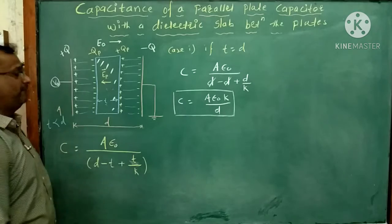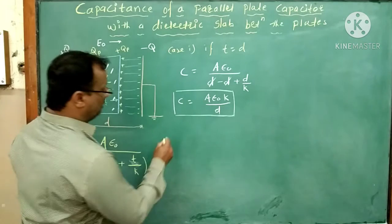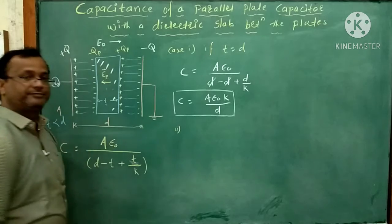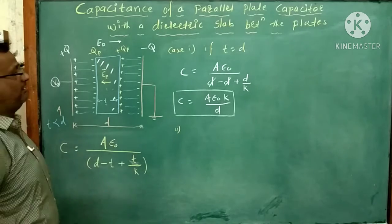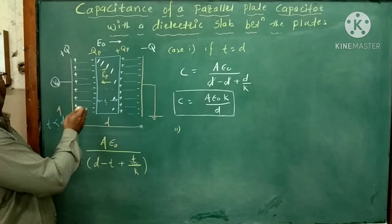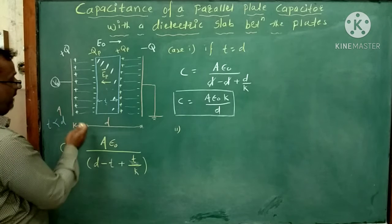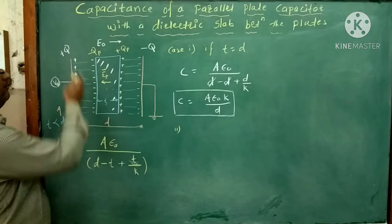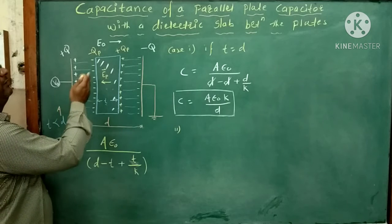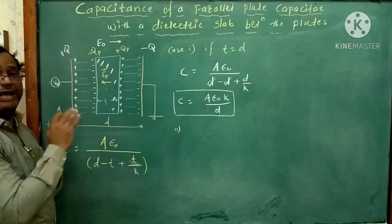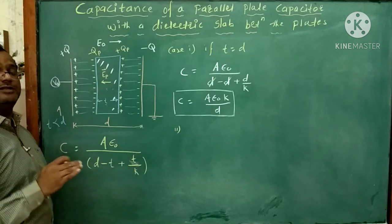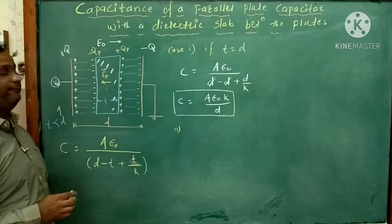So this will be the first case. Now we want to see the second case. Suppose we divide this distance by the number of different dielectric slabs of thickness T1, T2, T3, T4, and so on.